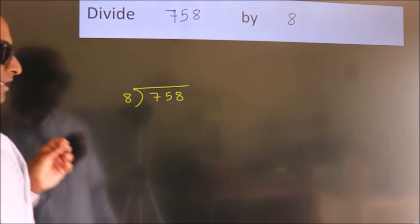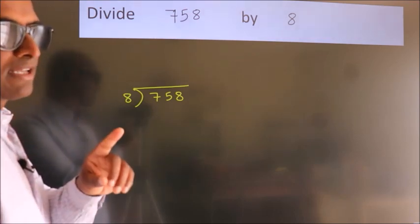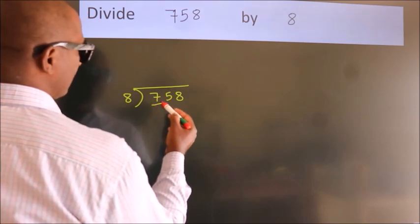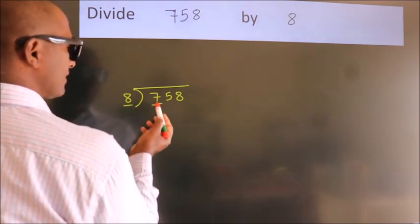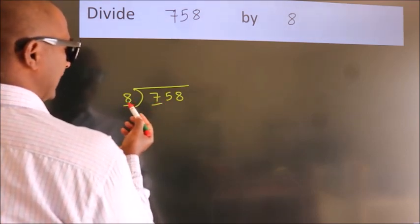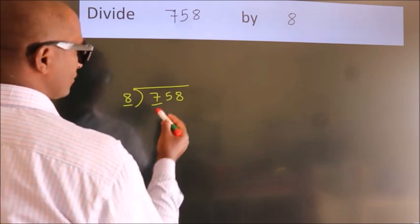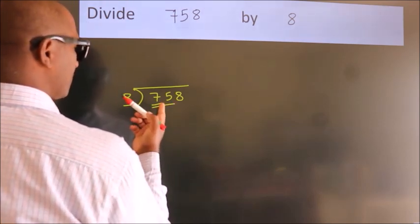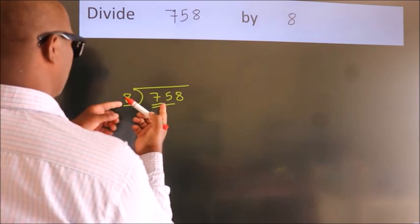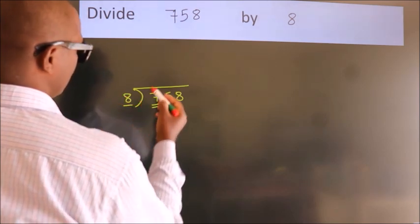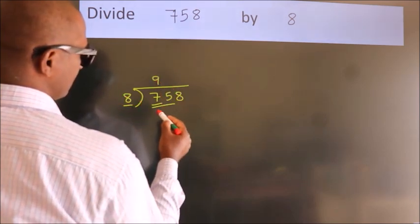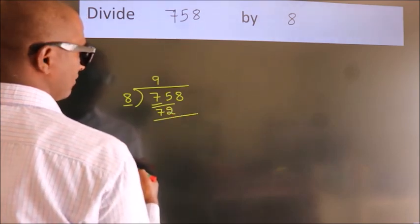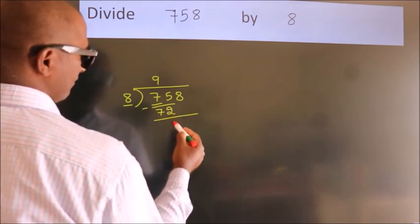This is your step 1. Next, here we have 7, here 8. 7 is smaller than 8, so we should take 2 numbers: 75. A number close to 75 in the 8 table is 8 nines, 72. Now we should subtract. We get 3.